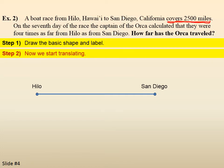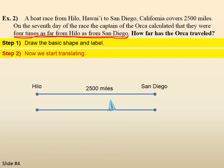Now, we'll translate. Well, it says the race covers 2,500 miles. So, that must be the distance between Hilo and San Diego. And, then it does say that on the seventh day, the boat was at a point four times as far from Hilo as from San Diego. So, if I let the distance between the boat and San Diego be x, the distance between Hilo and the boat will be four times as great or 4x. Four times as far from Hilo as from San Diego.